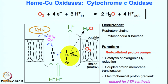This metalloenzyme occurs in the respiratory chain in mitochondria and is also found in bacteria. It acts as a redox-linked proton pump, where 8 protons come in and 4 protons go out, with 4 protons overall involved in the process. This catalytic generation of oxygen reduction into water is coupled with proton membrane translocation, creating an electrochemical proton gradient which is utilized for ATP synthesis. This is a membrane protein.